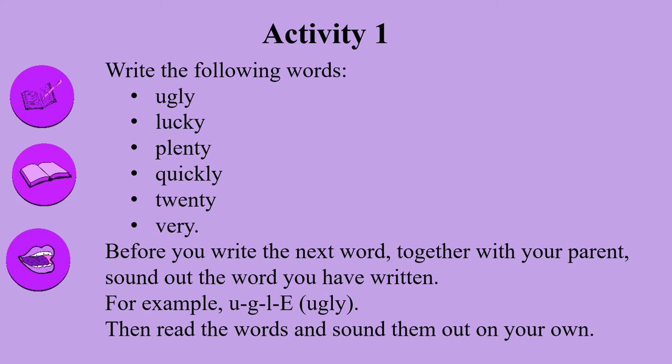For example, sound out: A, G, L, E — ugly. Remember, the Y at the end of the word makes the sound E. Lucky: L, A, K, E — lucky. The Y at the end of the word 'lucky' makes the sound E.